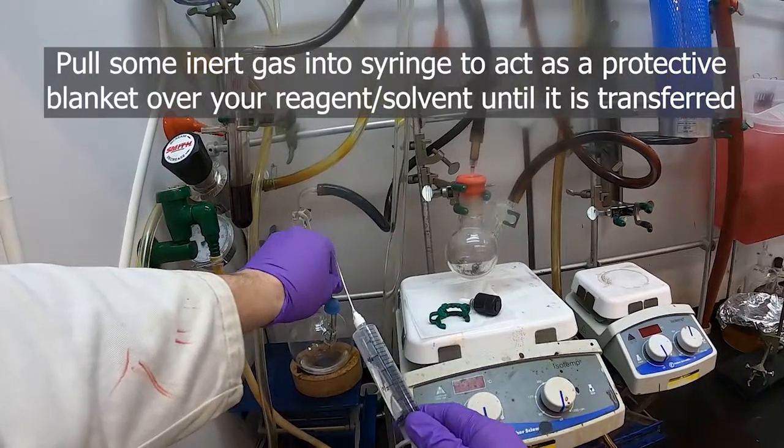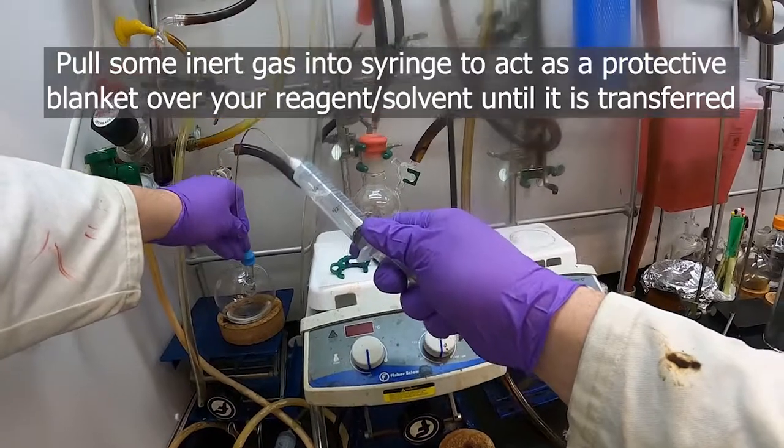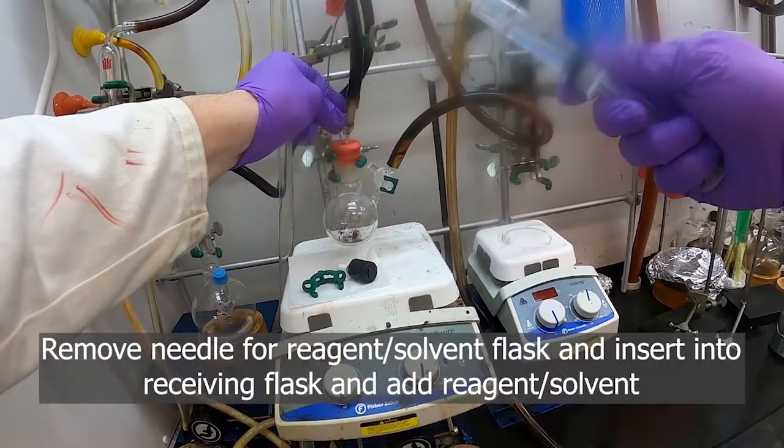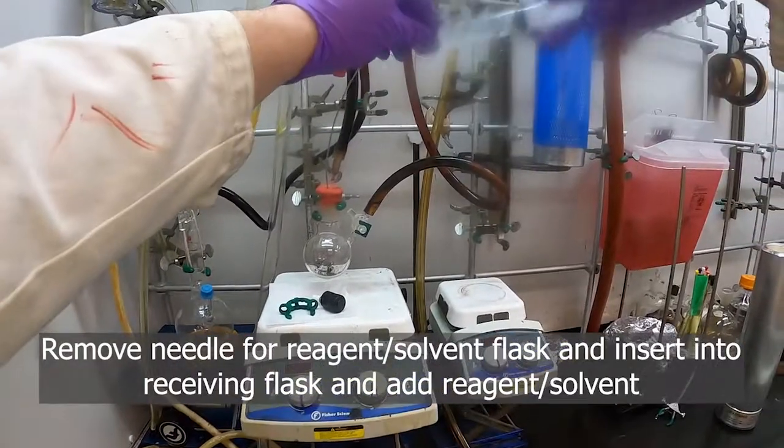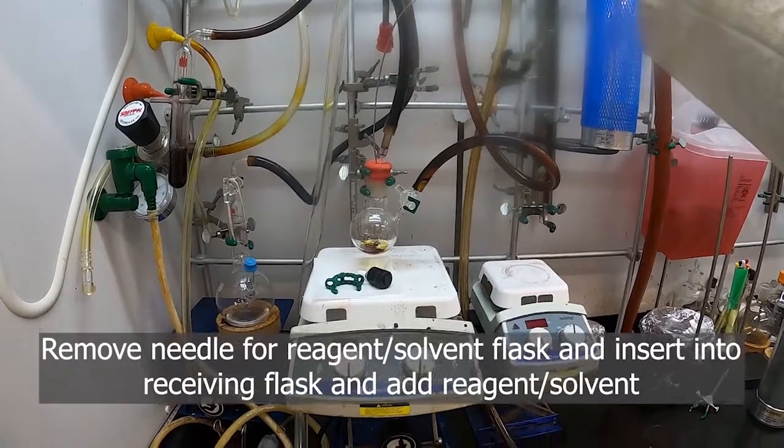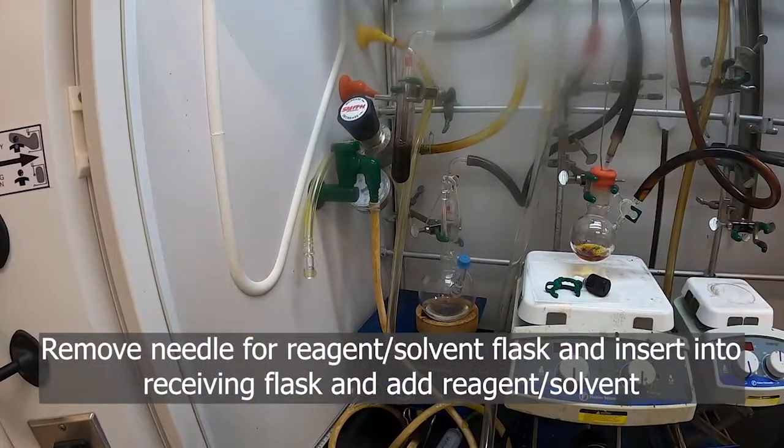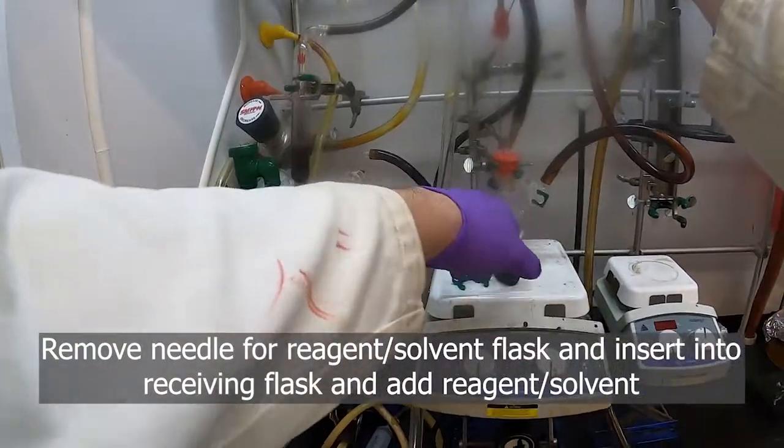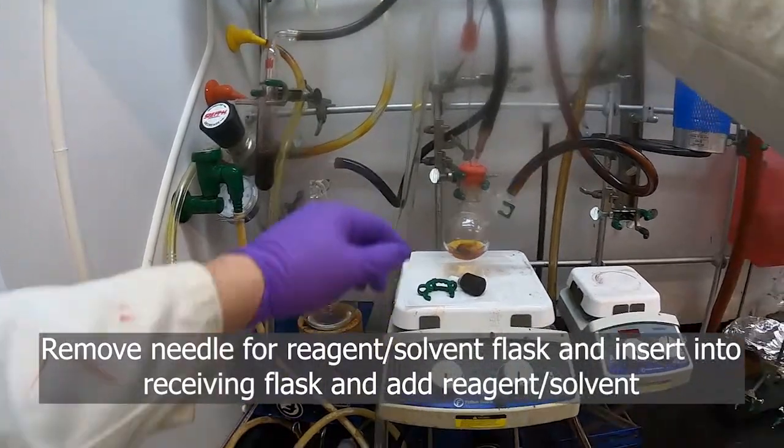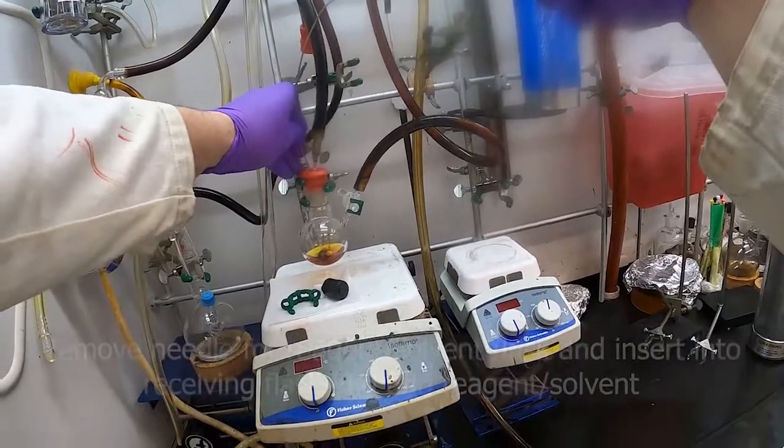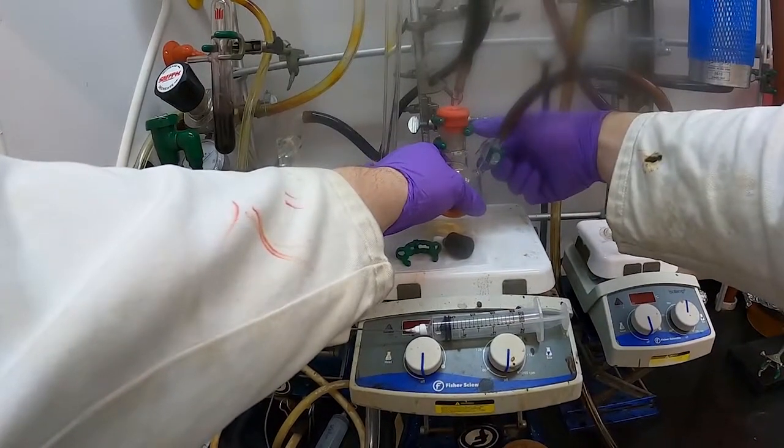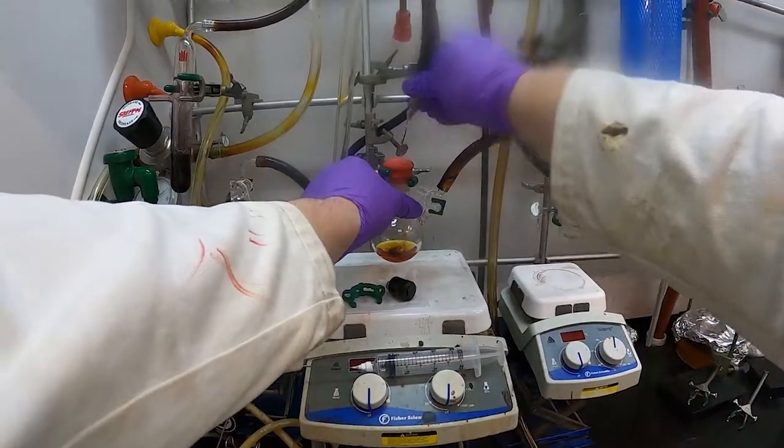Pull the tip out of the solvent in your flask here and pull a bit more gas. That will clear any of the solvent out of the needle and also put more inert gas on top of your solvent to protect it from air. Then, keeping control of the back of the syringe and the tip, transfer the needle into your receiving flask and push that solvent in. You'll see the bubbles coming out here as the solvent displaces some air from the flask.